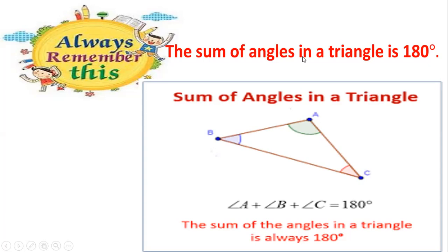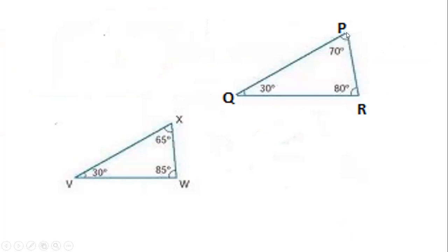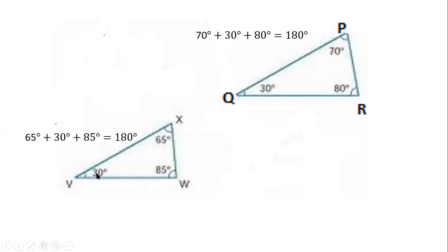Let's practice an exercise. We have triangle PQR where the angle at vertex P is 70 degrees, the angle at vertex Q is 30 degrees, and the angle at vertex R is 80 degrees. If I add 70 + 30 + 80, I get 180 degrees. In the second triangle, 65 + 30 + 85 also equals 180 degrees. So the sum of all angles in any triangle should always be 180 degrees.